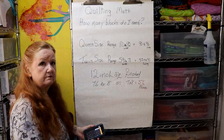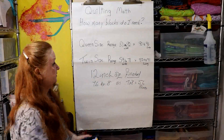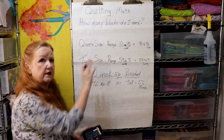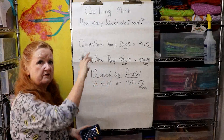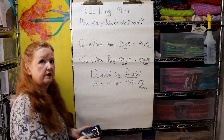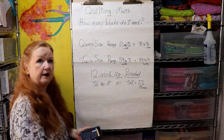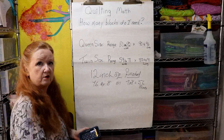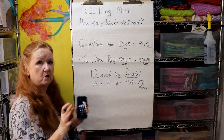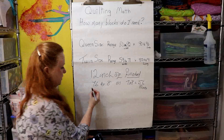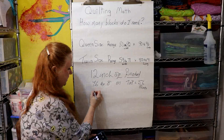For a twin size it's very simple: 5 across and 7 down equals 35 blocks. That's why quilters love that 12-inch block.